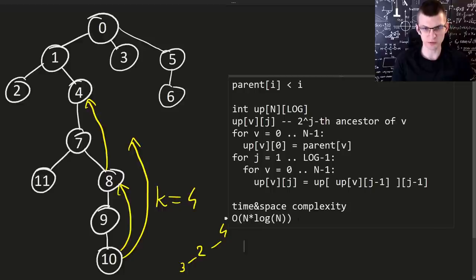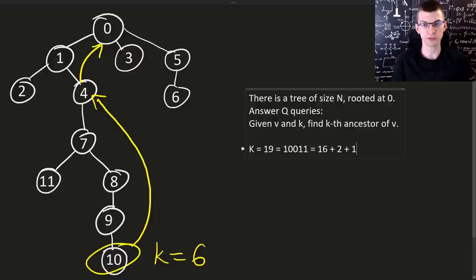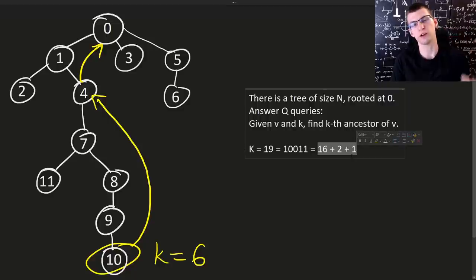This is preprocessing, and we still need to answer queries. And answering queries was discussed here, where we represent k in the binary representation. And then we know what jumps we need to do to go up, for example, here for 19 by 16 steps, then 2 and 1.